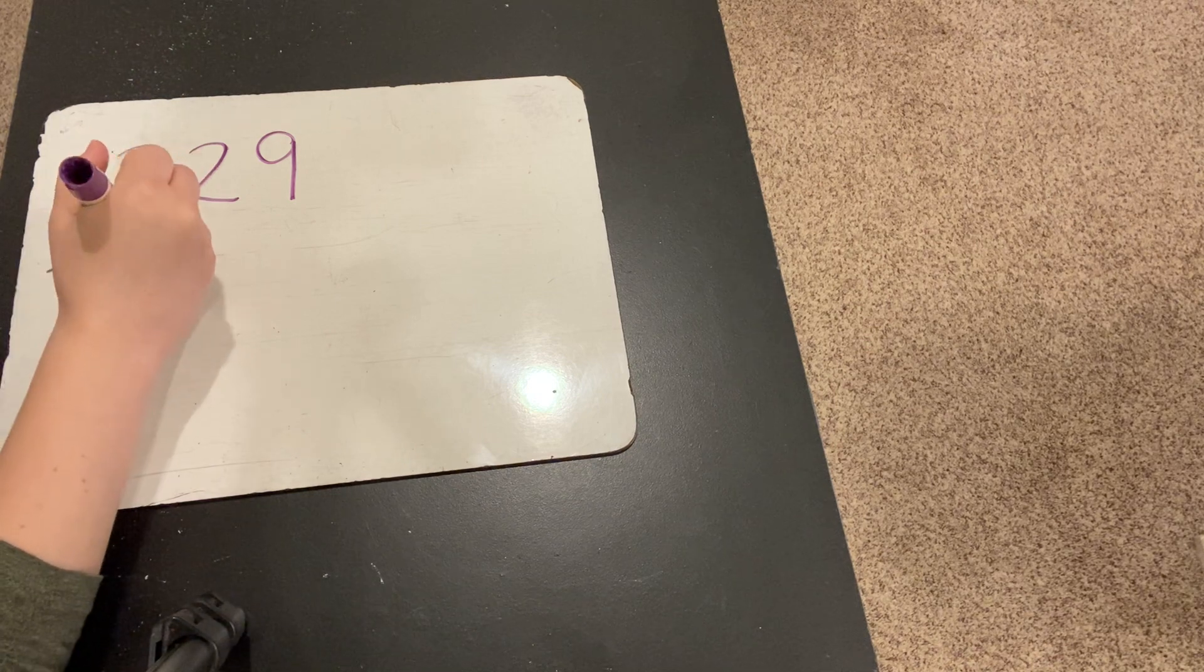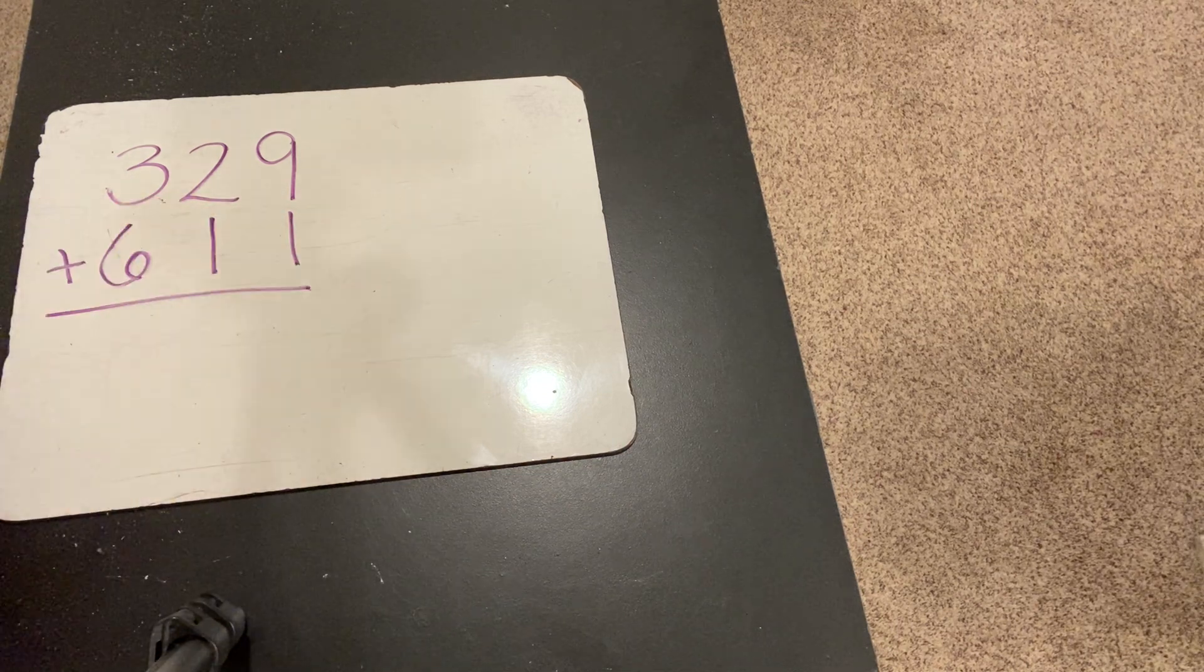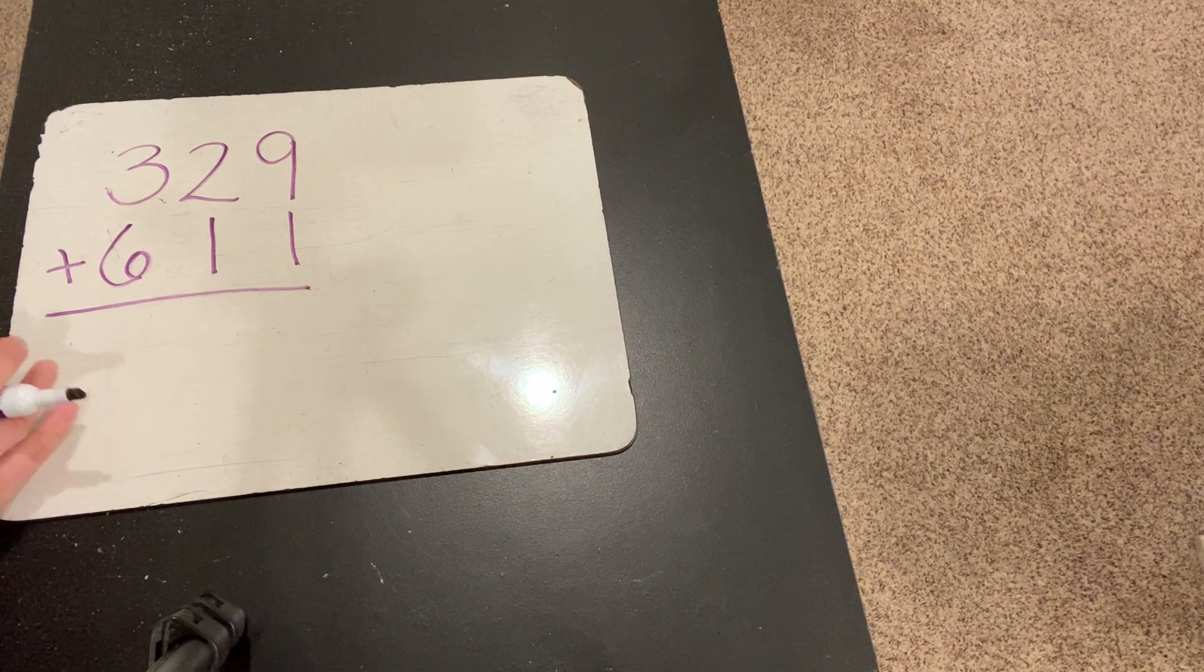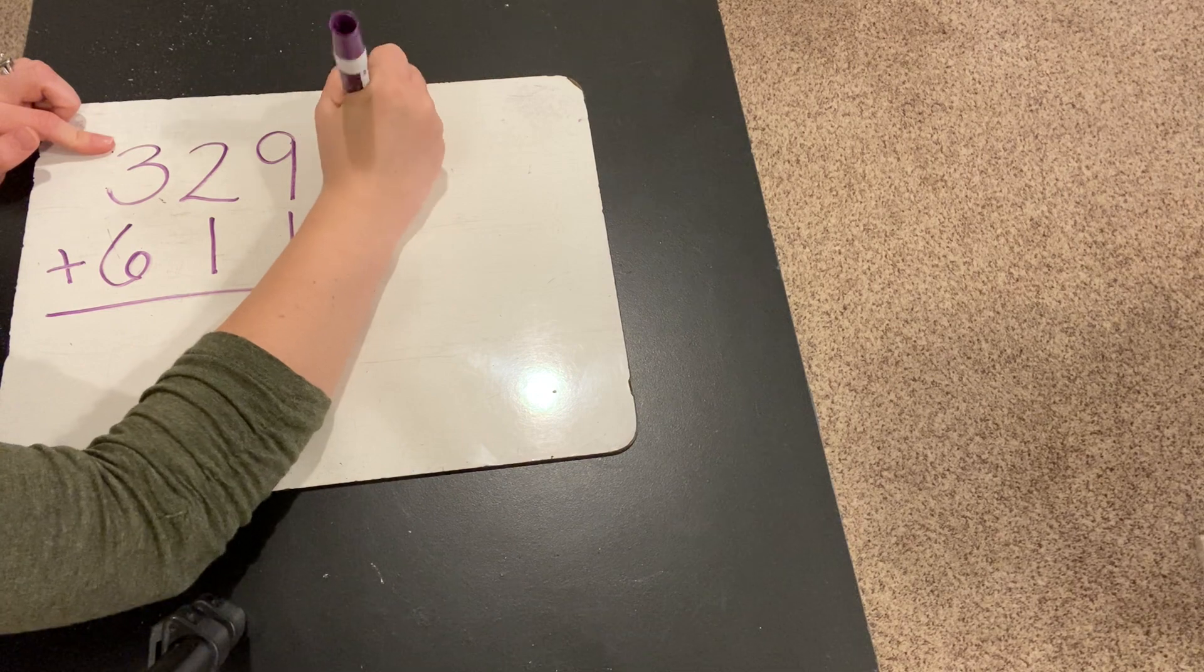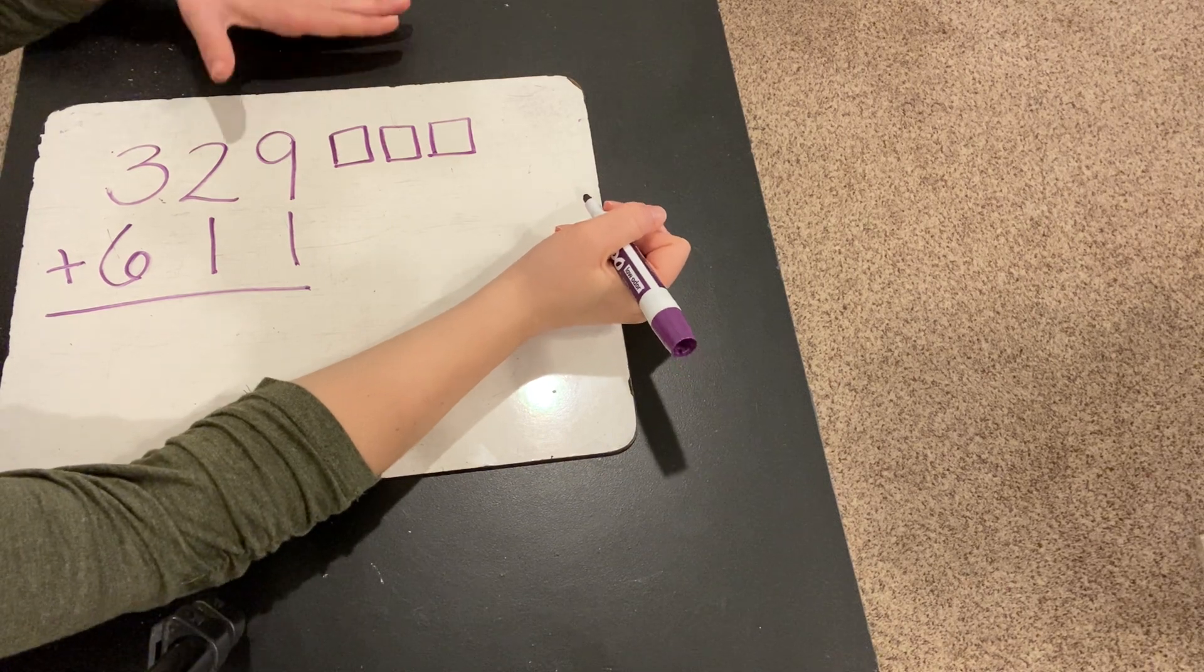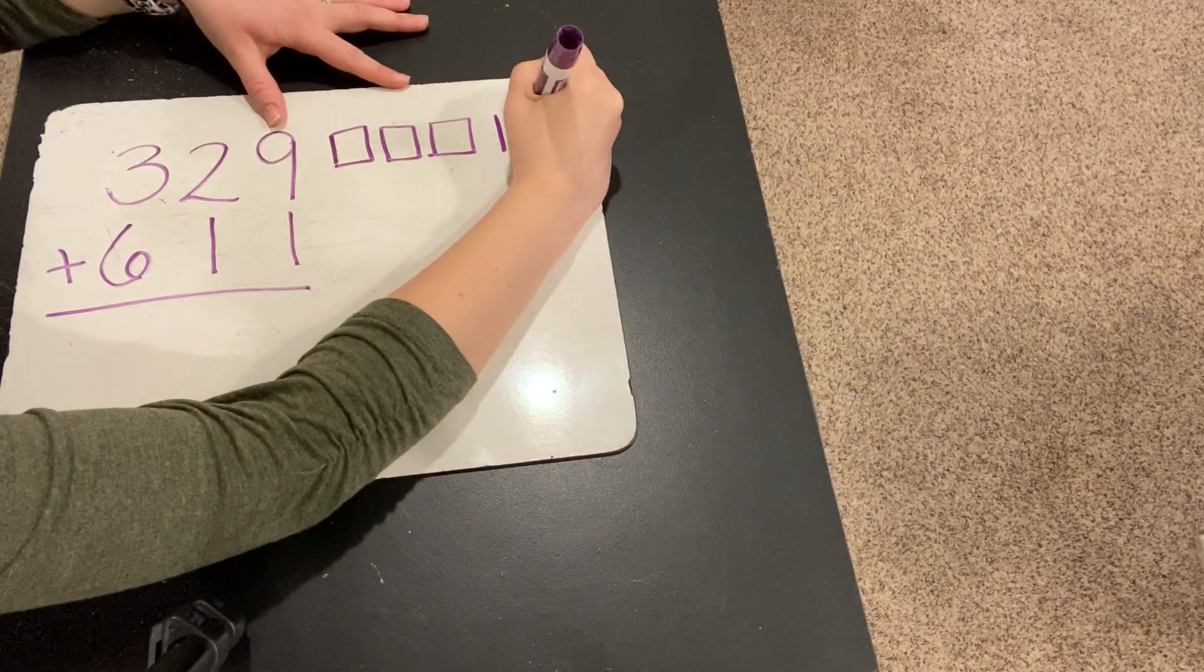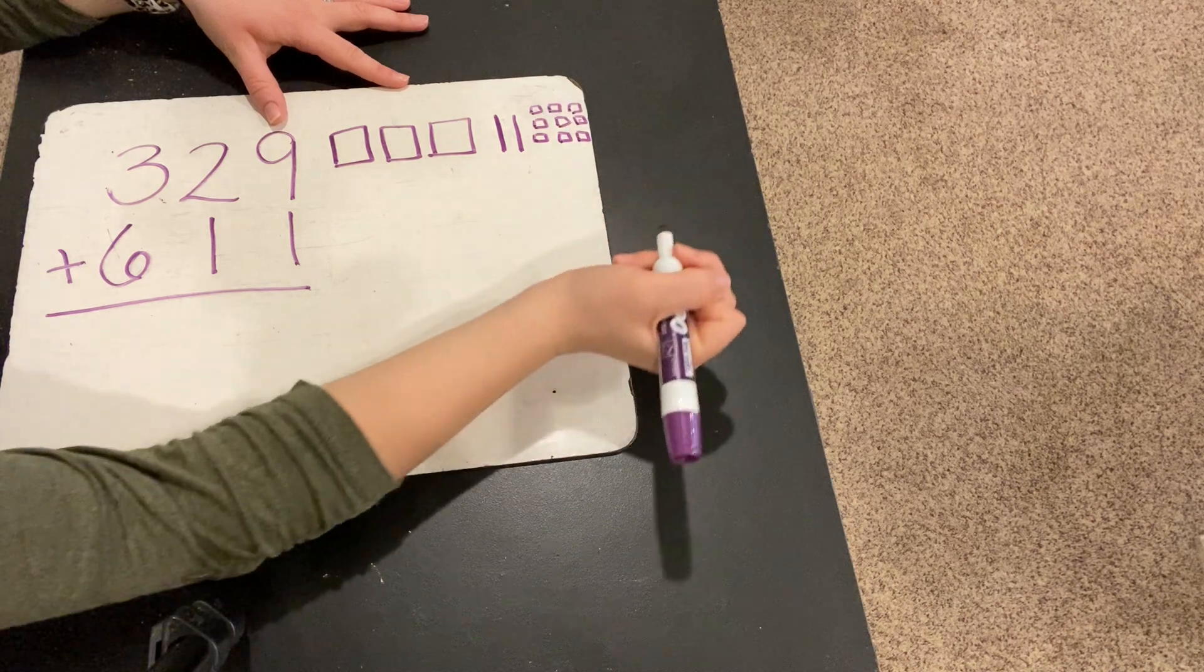Okay. Let's solve this problem. 329 plus 611. All right. Let's draw out our base 10 block model first. How many hundreds do we need for 329? We need three. 100, 200, 300. Then, how many tens? Two tens. One, two. And then, we need our ones. One, two, three, four, five, six, seven, eight, nine.